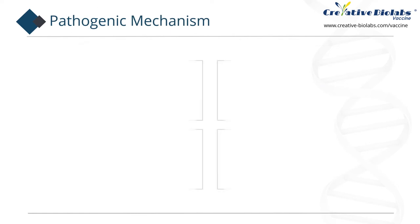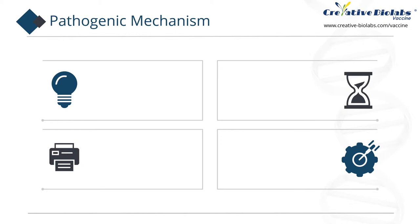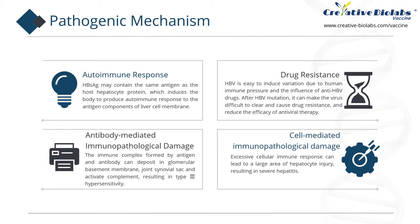The degree of hepatocyte damage is related to the strength of the immune response, and the mechanisms of immunopathological damage induced by HBV are as follows. Autoimmune response: on one hand, HBV can cause changes in hepatocyte surface antigens and expose liver-specific protein antigens on the membrane. On the other hand, HBsAg may contain the same antigen as host hepatocyte proteins, which induces the body to produce an autoimmune response to the antigen components of liver cell membrane.